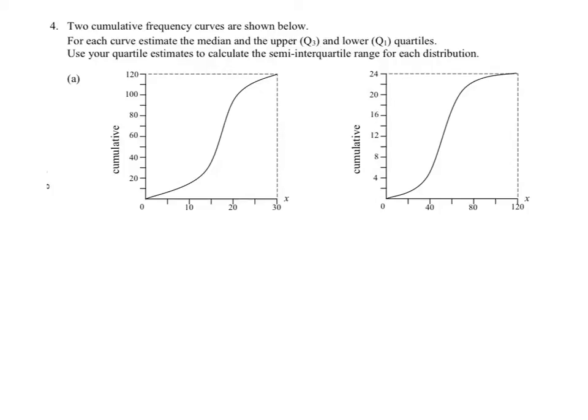This example has come from your revision booklet. There are two cumulative frequency curves shown, and we are asked to estimate the median and upper and lower quartiles. We're then asked to use those estimates to calculate the semi-interquartile range.